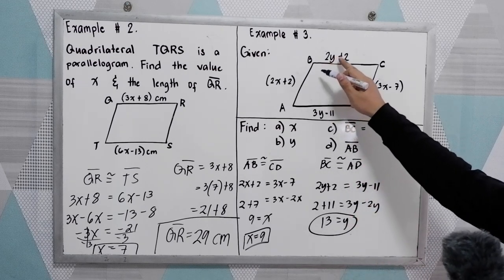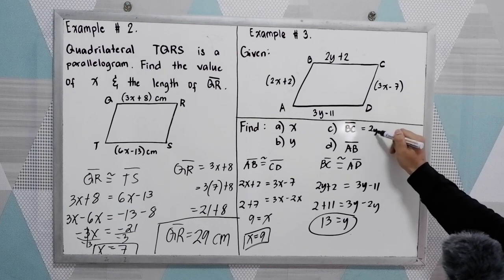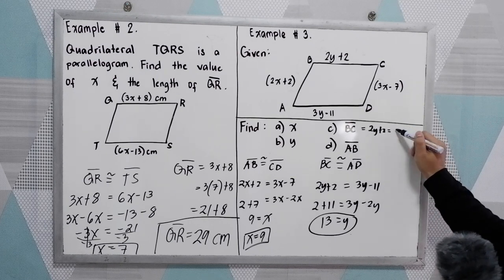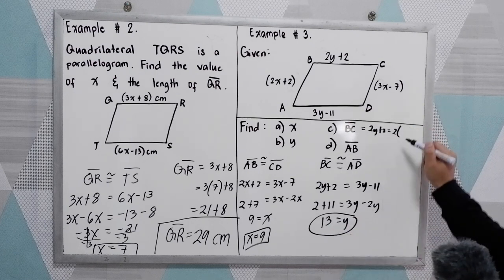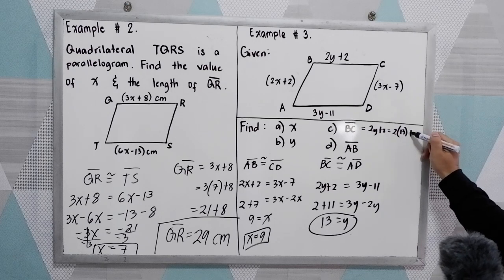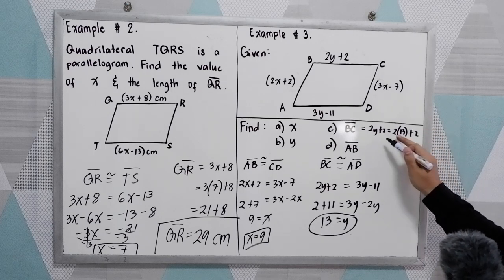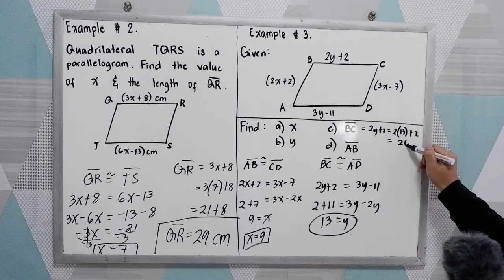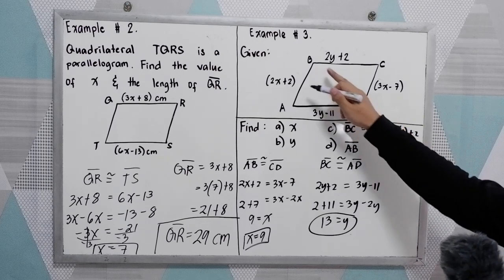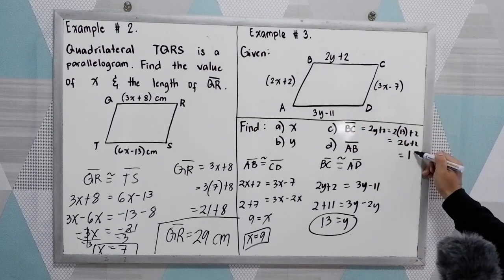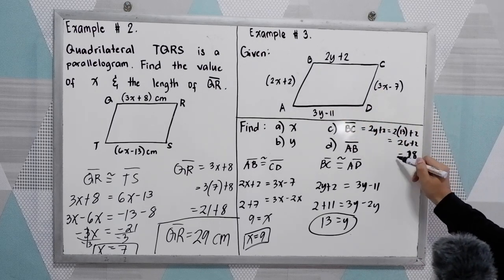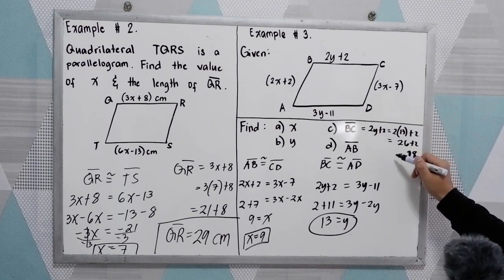So BC is 2y plus 2. Just substitute 2 times, our y is 13 plus 2. So we have 2 times 13, 26 plus 2. So BC is 28. 28 units.